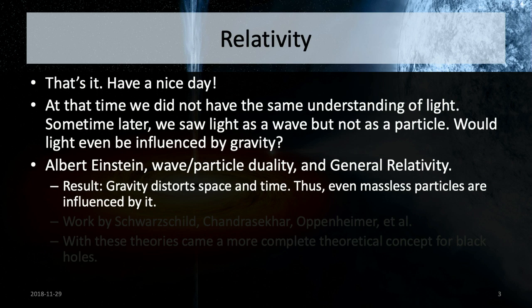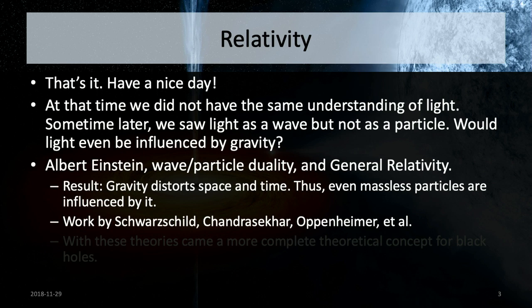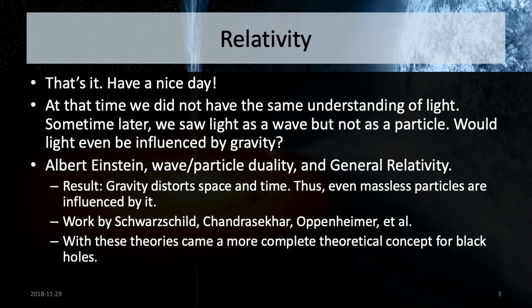The overall result is that gravity actually distorts space-time. So it doesn't matter that light is massless — it will actually be distorted as it passes through any curvature of space-time. Add to that a whole bunch of work by Schwarzschild, Chandrasekhar, and Oppenheimer, and a whole bunch of other people continuing to this day, and we have a very interesting set of theories that really helps describe what black holes are.